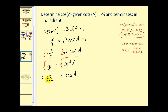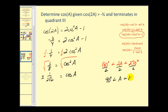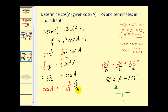We need to determine whether cosine A is positive or negative. Since angle two A terminates in the third quadrant, two A is between 180° and 270°, so dividing by two, angle A is between 90° and 135°, placing angle A in the second quadrant. In the second quadrant the x-coordinate is negative, so cosine A is negative. Therefore cosine A equals negative one over two square root two. Rationalizing gives negative square root two over four.